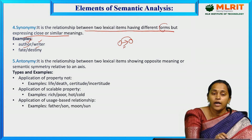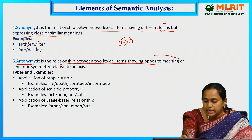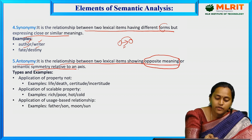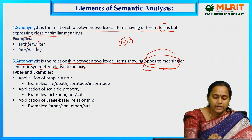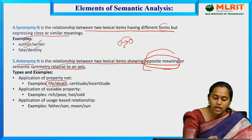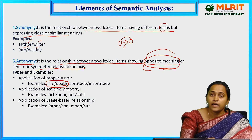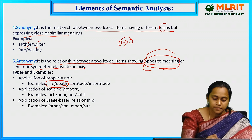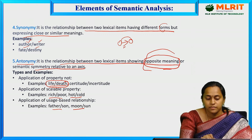Next, antonymy — the relationship between two lexical items showing opposite meanings. For example, life and death, rich and poor, hot and cold, father and son, moon and sun. These are examples of opposite meanings that come under antonymy.